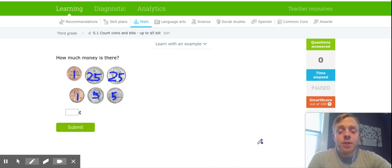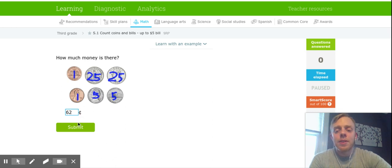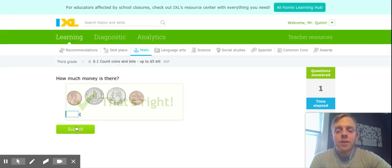Now it's just a matter of doing some basic addition. Line up your numbers. Line up your place values, and you shouldn't have any problem. 25 plus 25 is 50. 50 plus 5 is 55. 55 plus 5 is 60. 61, 62. So I'm going to come down here, I'm going to type in 62. I have my cent sign at the end and I'm going to go ahead and click submit.